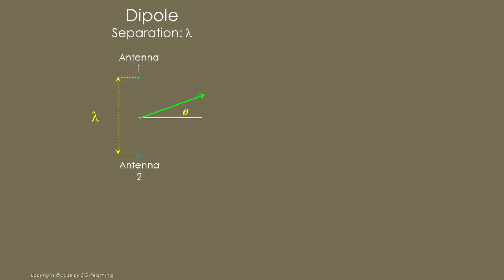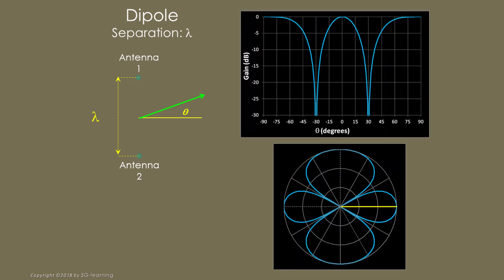If we further increase the distance between elements to a full wavelength, the patterns change radically again. Around the direction perpendicular to the array line theta equal zero, we observe a range of relatively high received power. It is called the main lobe. At the other side of lobe gain regions, we observe secondary lobes. Note that the main lobe width is 60 degrees.